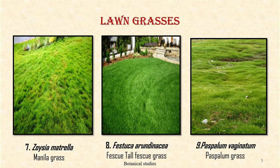Zoysia matrella, commonly called as Manila grass, Korean grass or Manila temple grass. The texture of this grass is medium and it is suitable for open sunny situations. Festuca arundinaceae, commonly known as fescue grass or tall fescue etc. The texture of this grass is coarse and it is suitable for shade and can survive on inferior soils.